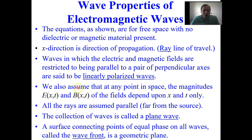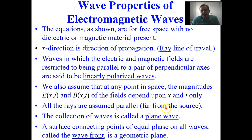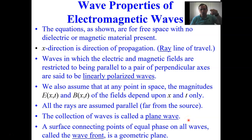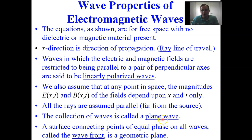We also assume that at any point in space, the magnitudes of the electric and magnetic fields at position x and time t depend only upon position and time. All these rays are assumed to be parallel — that is, far from a source. This collection of parallel waves is called a plane wave: imagine a bunch of parallel rays all moving together, each perpendicular to a large flat surface.